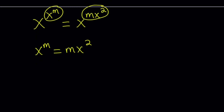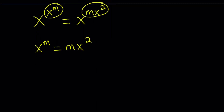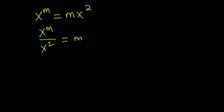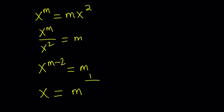That makes sense. Then divide both sides by x squared — that gives you x to the m divided by x squared equals m. Subtracting the exponents, you get x to the power m minus 2 equals m. From here, if you raise both sides to the power 1 over m minus 2, you get x equals m to the power 1 over m minus 2. So we're basically using m as a parameter to parameterize this equation and solve it.